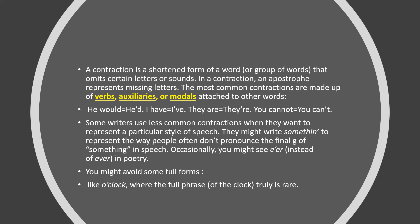Now we move to the last slide of the lecture: contractions. A contraction is the shortened form of a word. If we have a long word, we can write it shortly using a contraction. For example, 'cannot' can be written as 'can't.' 'We would' can be written as 'we'd' with apostrophe D. We can use these contractions for many things — these are the contractions.